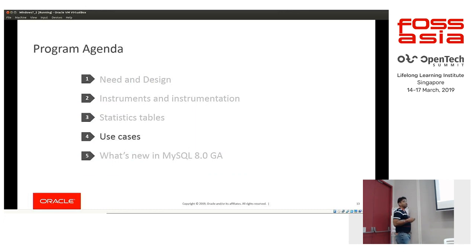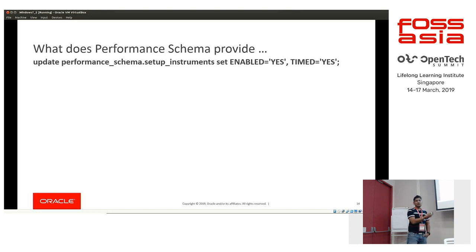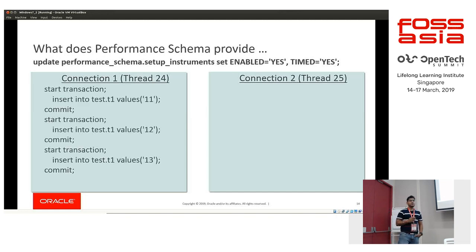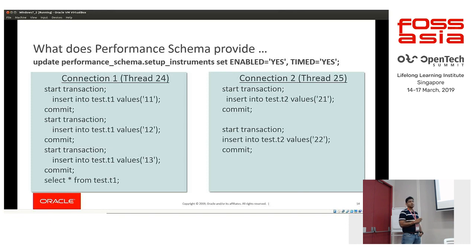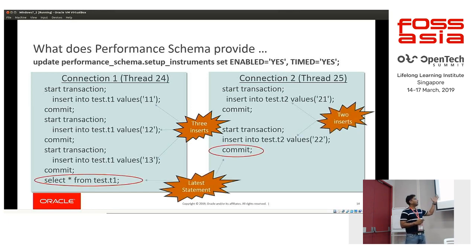Now let's take use cases to see how we can use MySQL Performance Schema to diagnose real-world issues. First, let me show what information you can get. If I run an UPDATE on setup_instruments setting enabled=YES and timed=YES, I'm telling Performance Schema to collect everything and collect timing information for all activities. Suppose I have two sessions: session one executes three INSERT statements then a SELECT *, and session two executes two INSERT statements and a COMMIT.